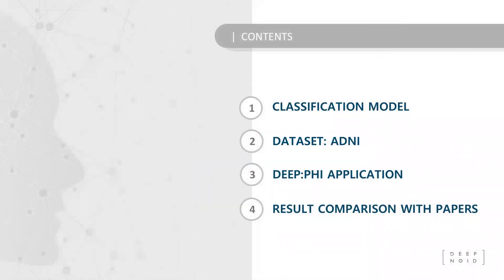First, I will introduce the topic for today's presentation. We will go over development of algorithms for the way of building an image classification model, what dataset is used, and the method of using DeFi for classification between normal and Alzheimer's disease. Afterward, DeFi's research is to be compared to the research of other models discussed in published papers.